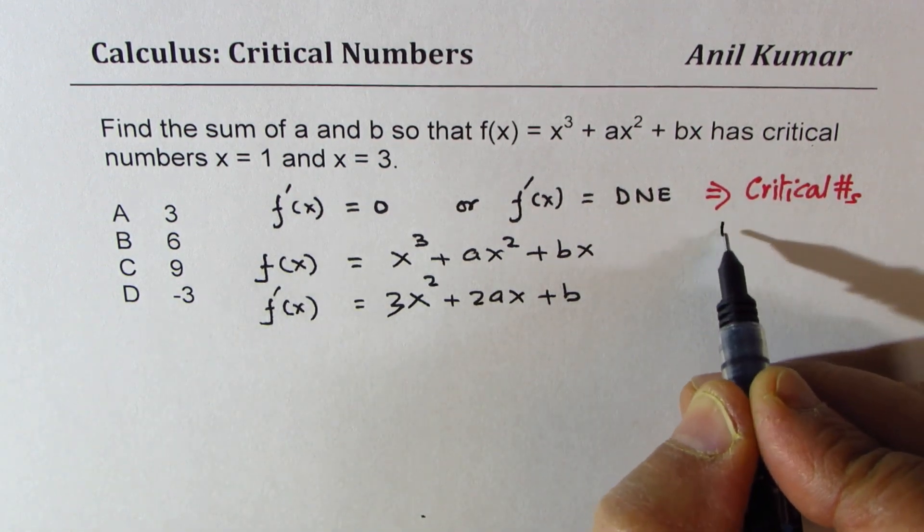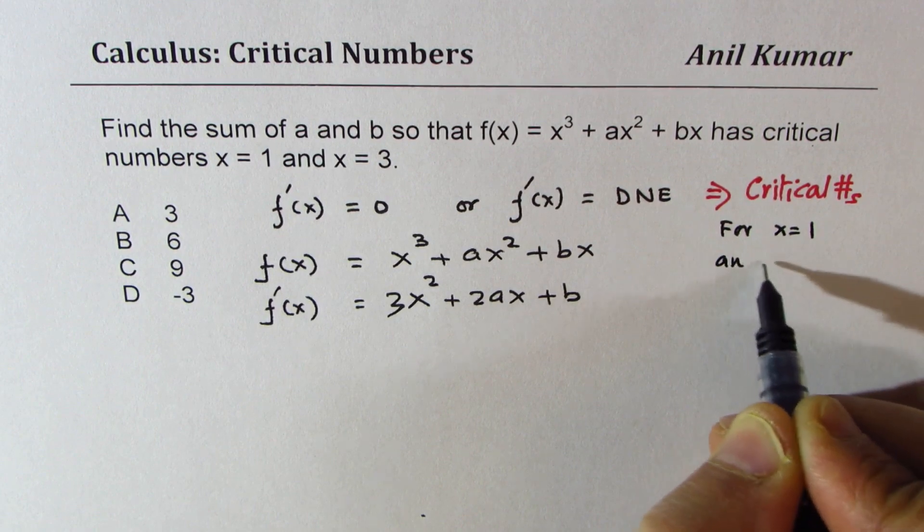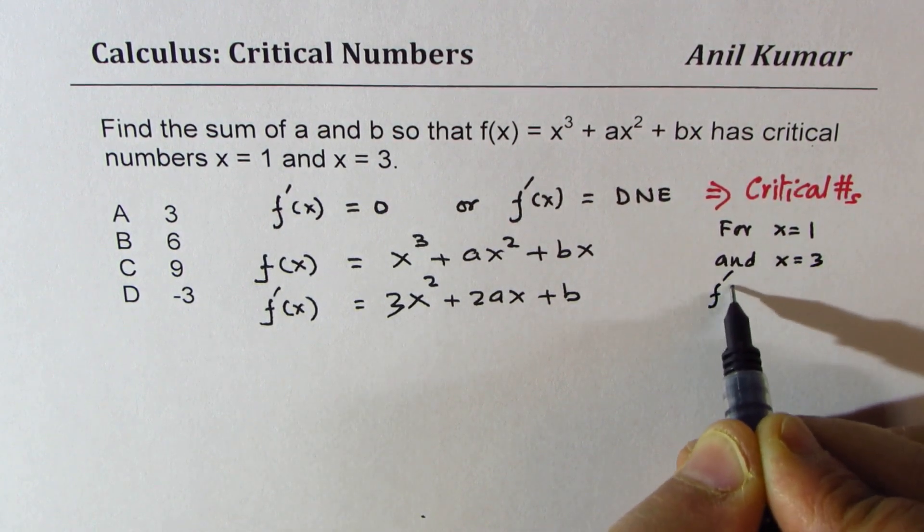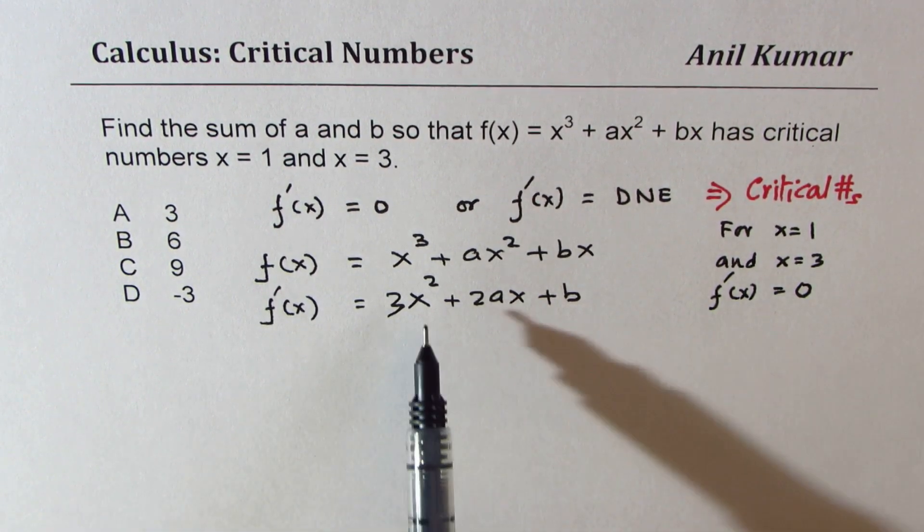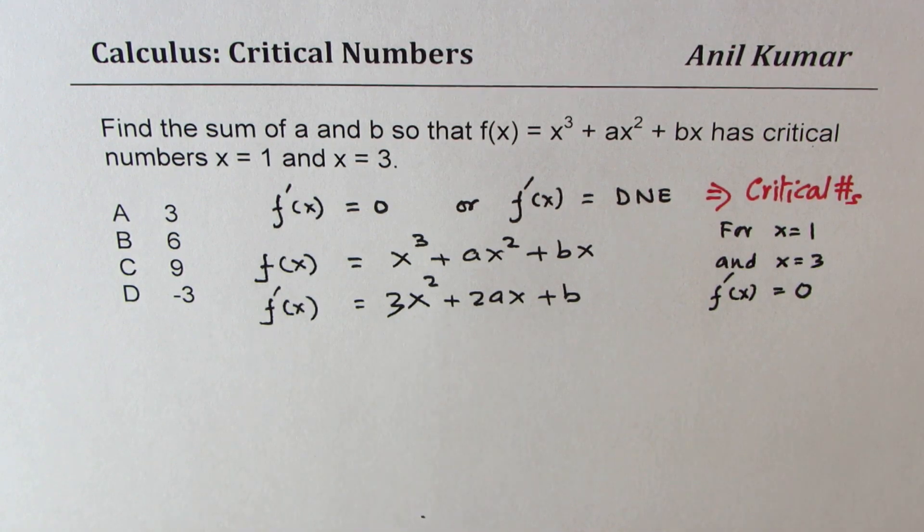Since it is never undefined, it has to be 0. So that gives us two equations. So let's put x = 1 here. So for x = 1, f'(x) = 0.